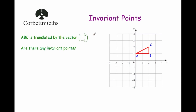Our next question: we've got triangle ABC again, and it's translated — so slid, moved — by the vector minus three, minus one. The top number is left or right, so that's three squares to the left. The bottom number means one down. So we're going to move the shape three squares to the left and one square down, and we're going to see: are there any invariant points?